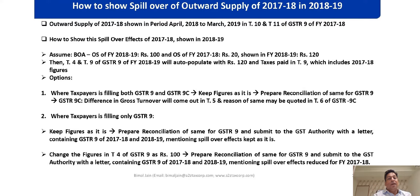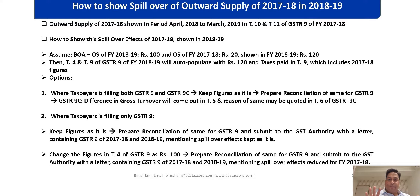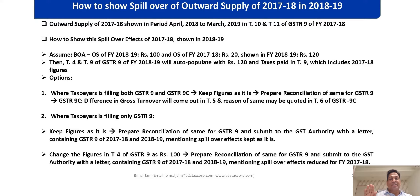Now the second category: if you are a taxpayer not filing 9C and only filing GSTR 9. GSTR 9 is optional if your aggregate turnover is less than 2 crore. If it is between 2 crore to 5 crore, then GSTR 9 is compulsory but 9C is not compulsory. Rule 80, sub-rule 3 of the CGST Rules got amended.